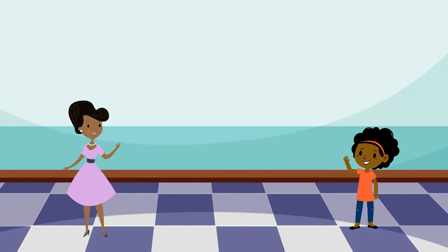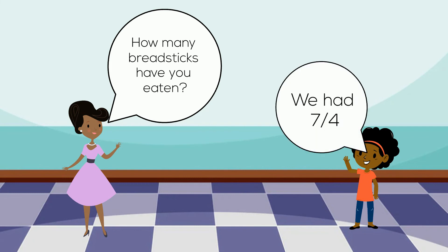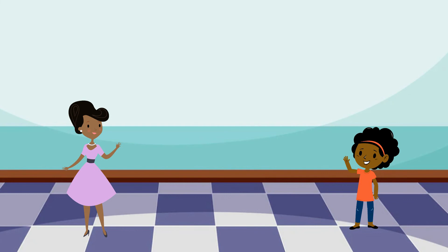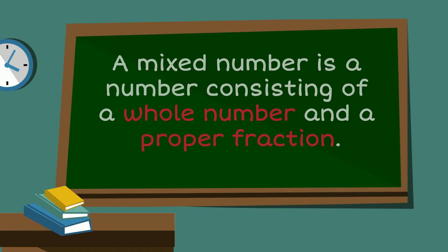Before I close off this lesson, I must make mention of mixed numbers. Lisa's mom came outside to check on the party and asked Lisa how much of the breadsticks they had eaten. Lisa responded, 'Mom, we had 7 quarters of the breadsticks.' But Lisa's mom asked, 'So how many breadsticks is that?' What she was really asking is what is 7 quarters as a mixed number instead of an improper fraction? A mixed number is just an improper fraction but changed to show the number of wholes and parts represented by the fraction.